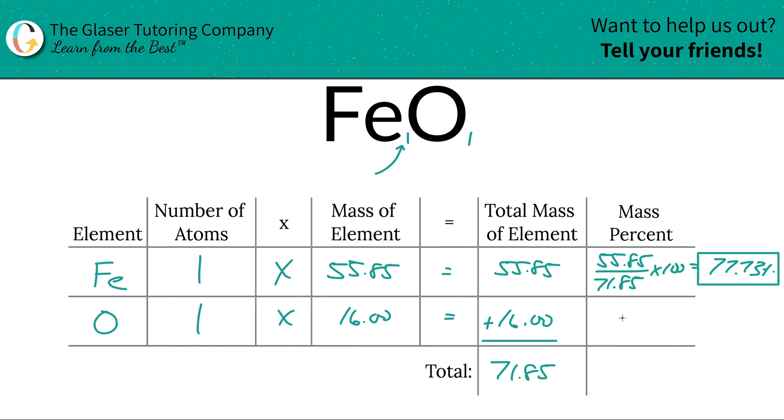And then same thing for oxygen. We're going to take the total, 16, divided by 71.85, the total of the entire compound, multiplied by 100. You're looking at this column by the way. The only reason why this column is identical to this column is because there's only one atom of each. And then when we do that calculation, it's going to be 22.27% here.